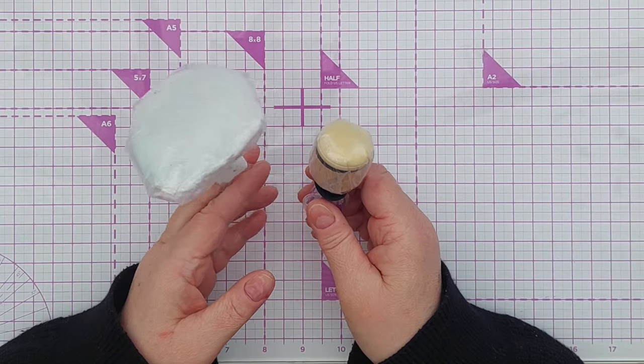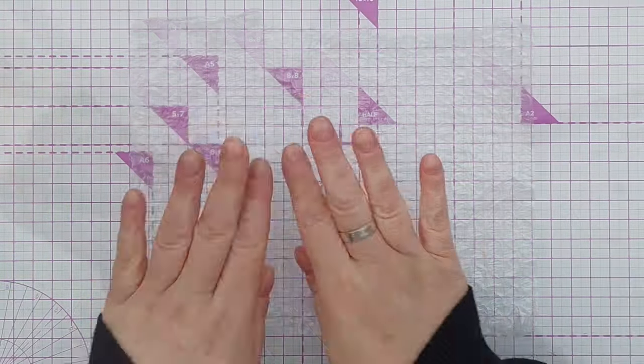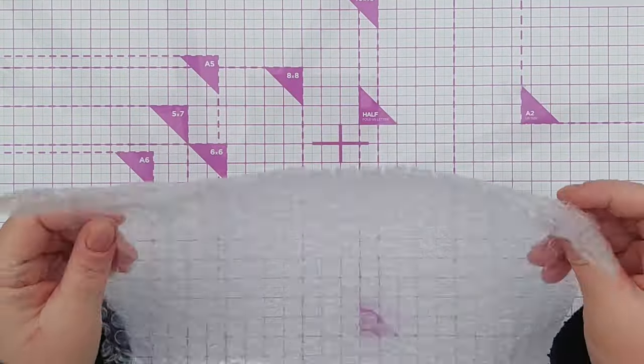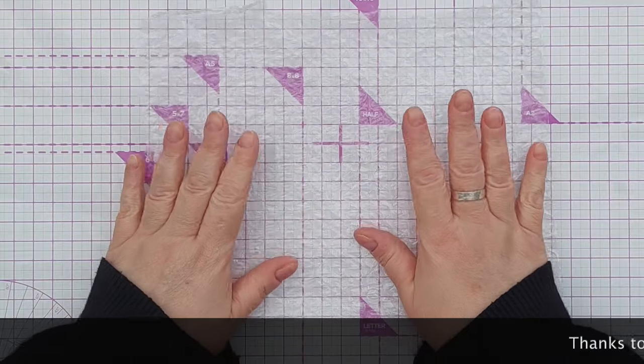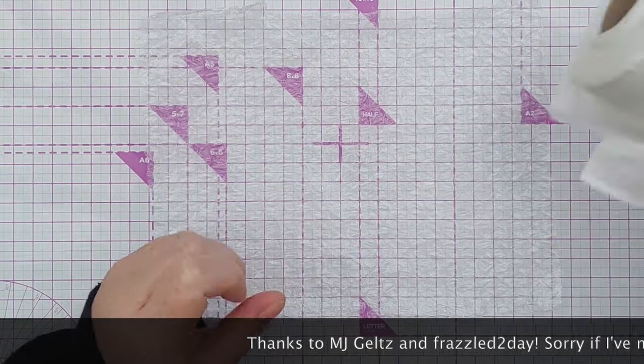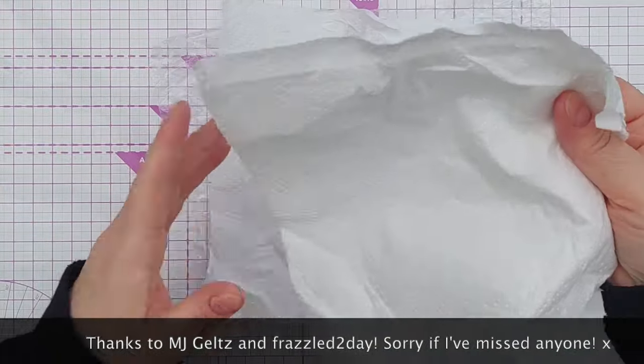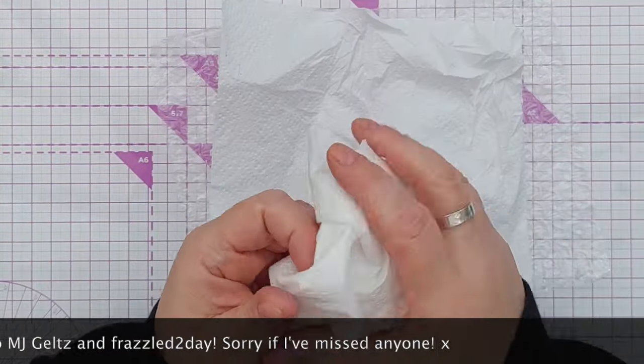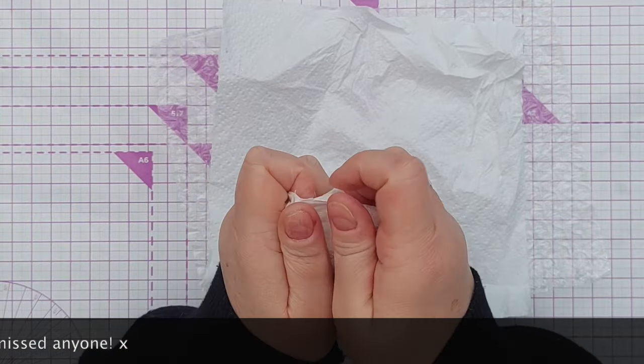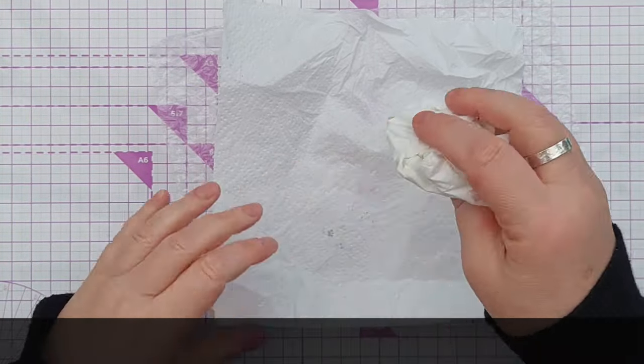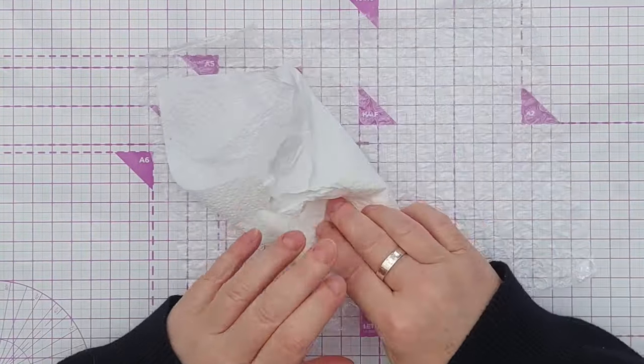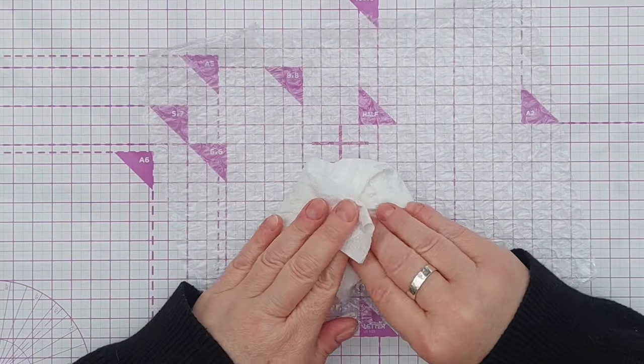But today we're going to make a new type of smusher. For today's smusher I'm actually going to use bubble wrap and this was an idea that was recommended to me by several viewers of my how to make a smusher video. What you do is you get several pieces of paper towel, scrunch some up into a nice flattish roundish shape and then you wrap that in another piece of paper towel just to keep everything together.